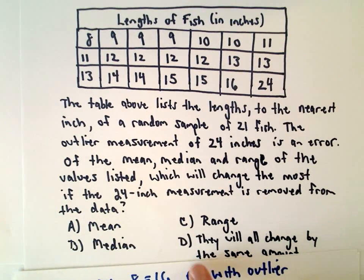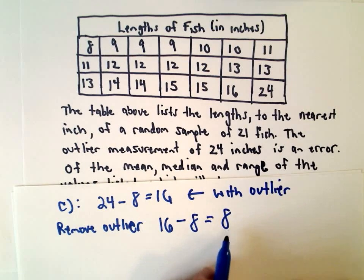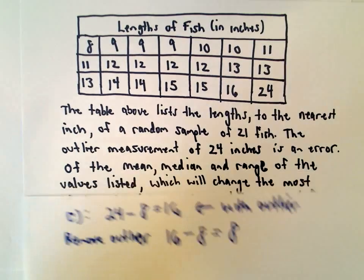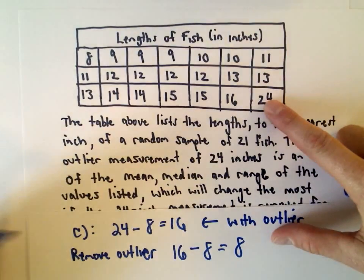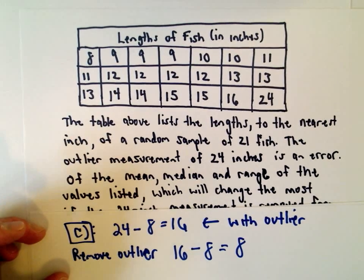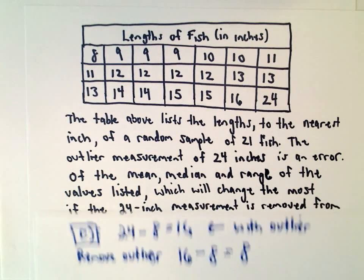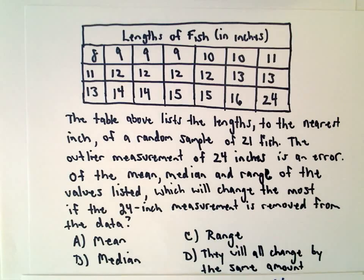Answer choice D says they will all change by the same amount - definitely not. The range is going to change by a value of 8. The mean and the median aren't going to change by that much, so it's clearly answer choice C. You could be more thorough and really compute all this stuff, but intuitively answer choice C is clearly the right answer.